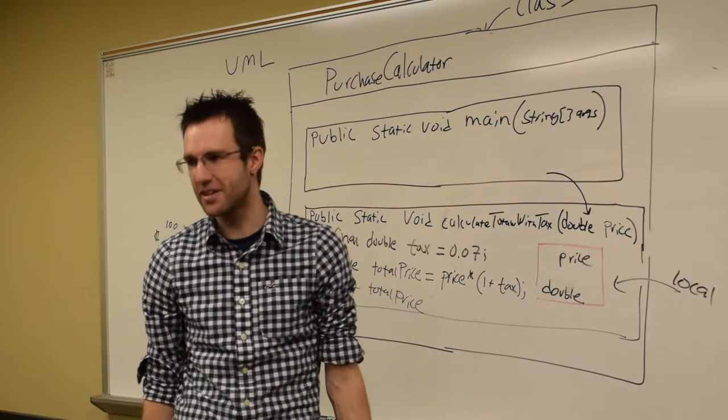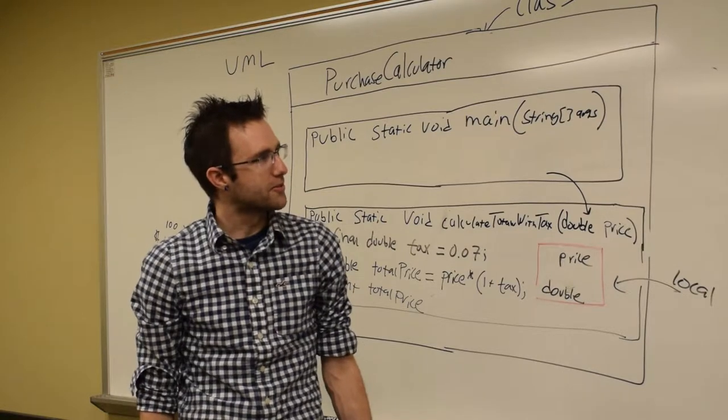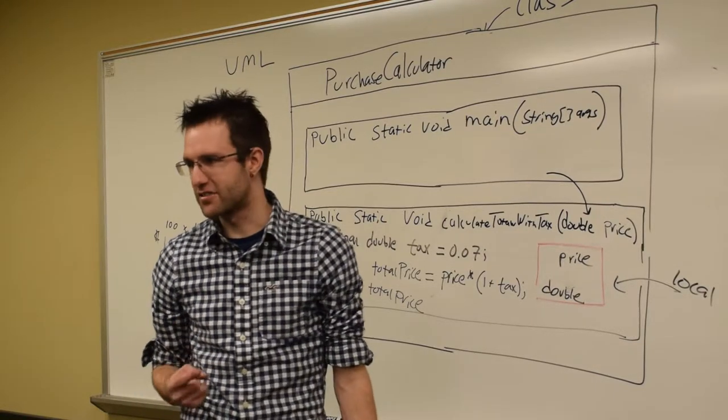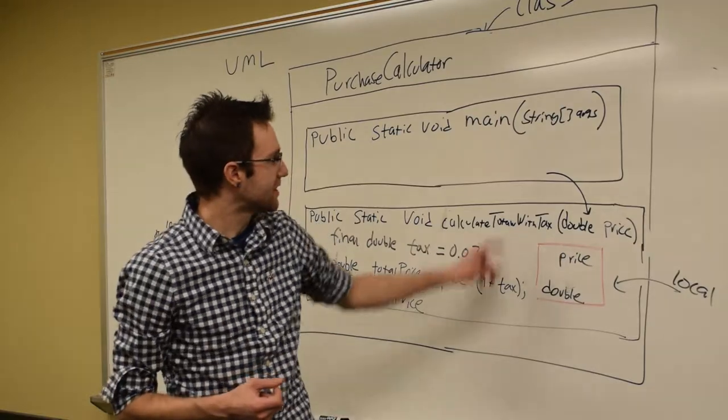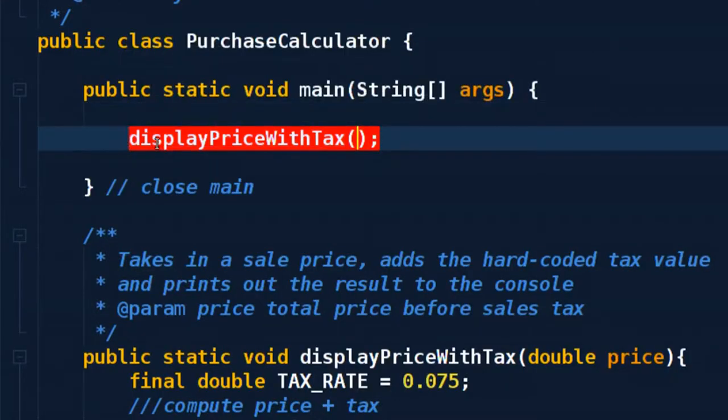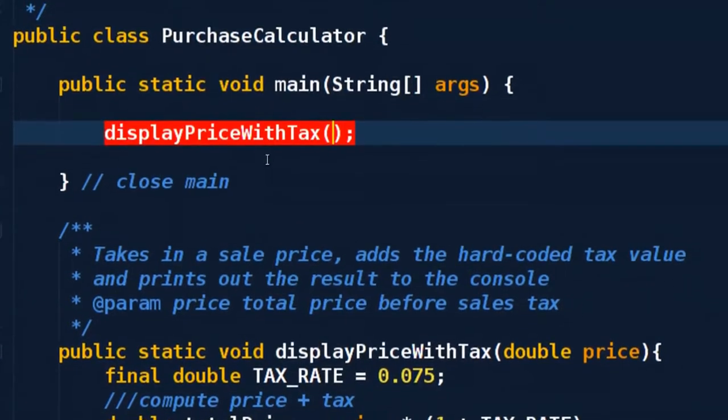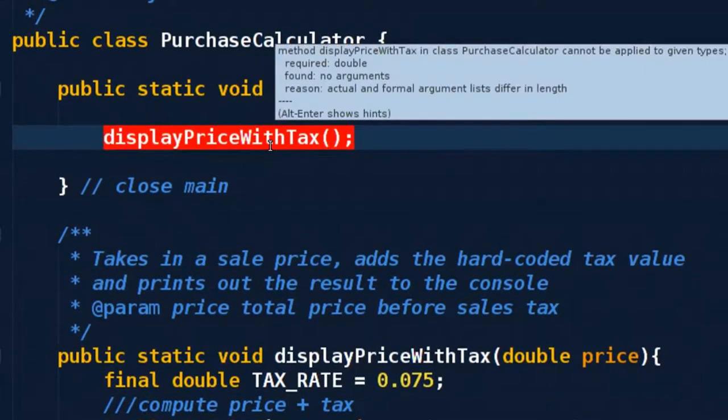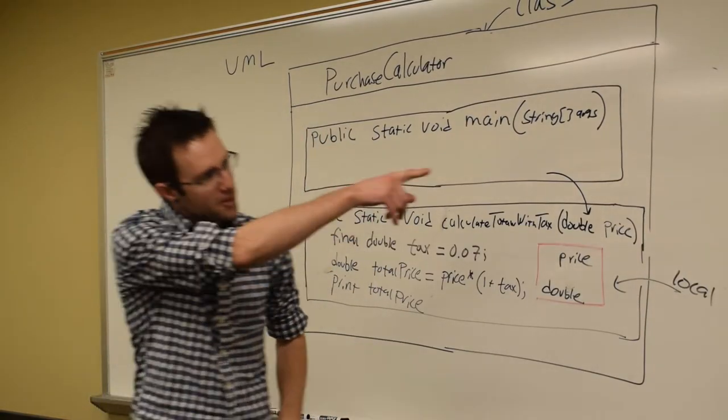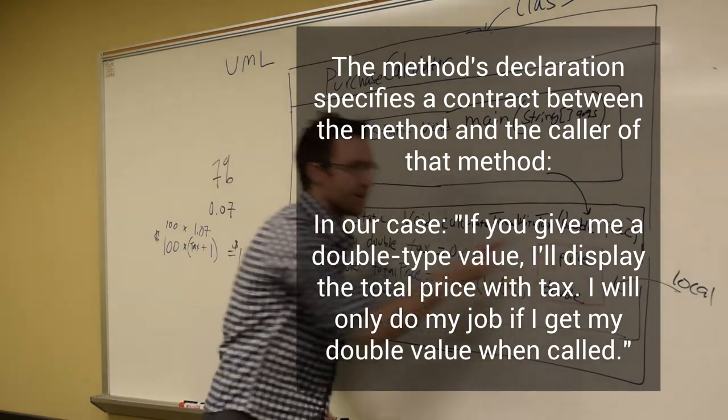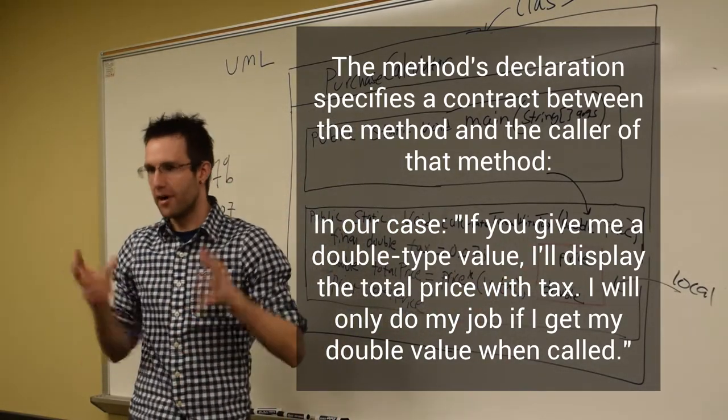First of all, what's an argument list? The argument list is everything that occurs inside these parentheses of the method call. So this would be list item one, list item two. Now, that's not Java. I'm just demonstrating it. So, what it's saying is, I know what display price with tax is. It's a method. It's in this own class.